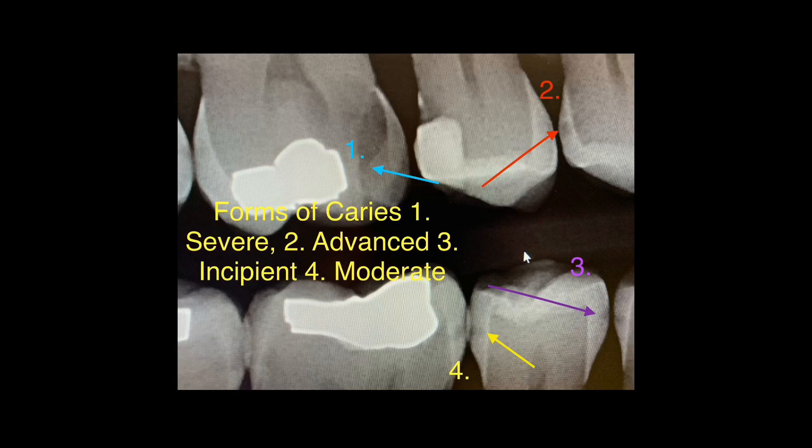There is another form called moderate caries, labeled number four. In this case, the caries has extended past halfway through the enamel but has not yet reached the dentine. Because it is more than halfway through enamel, we classify this as moderate caries.